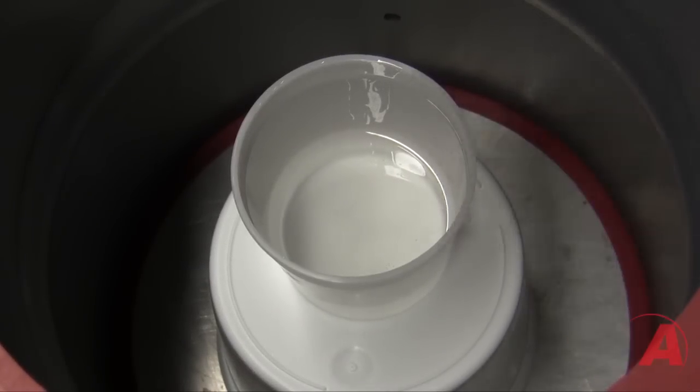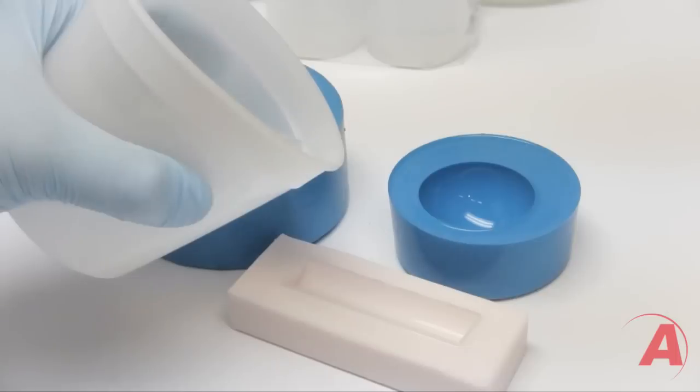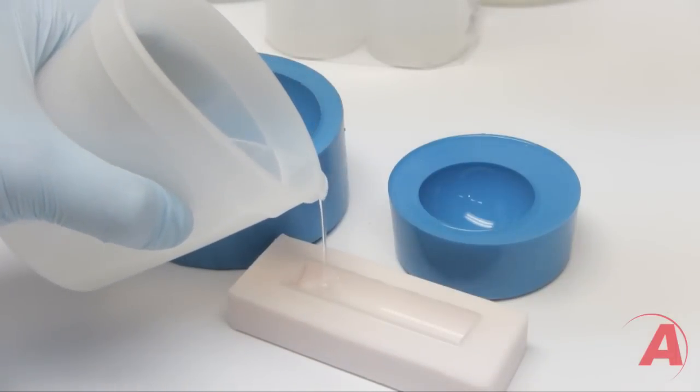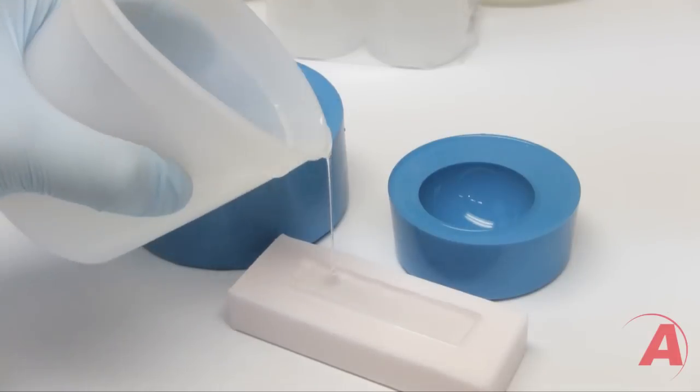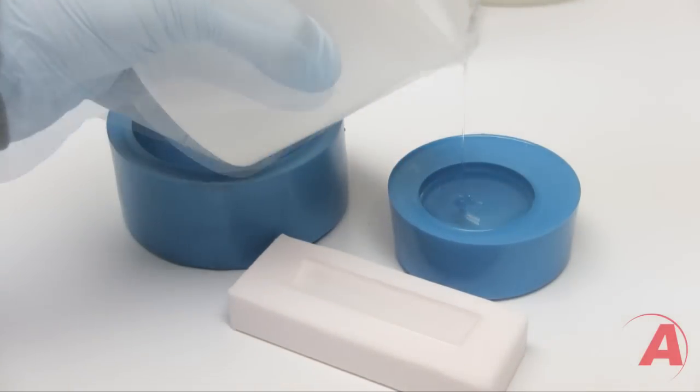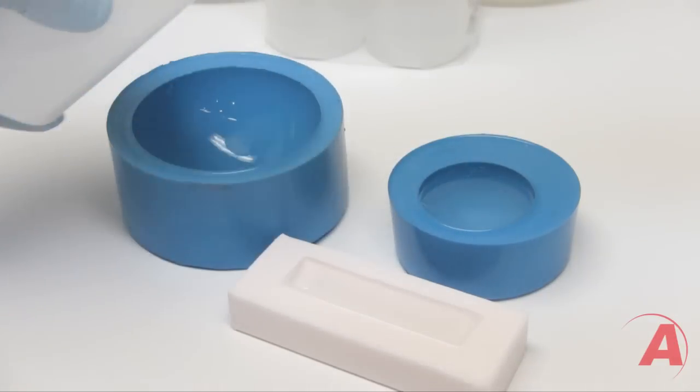After a couple minutes in the vacuum chamber, the majority of the air within the system should be evacuated. When filling your molds, it's best to keep your cup as close to the mold as possible so that you don't incorporate any air. At this point, some might choose to place their mold inside a pressure pot, which would compress any remaining air left inside the system.